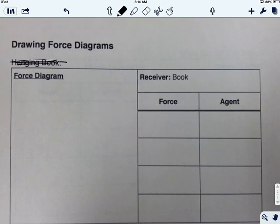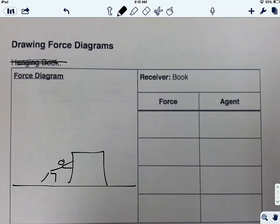So instead of the hanging book, let's imagine that it's a man pushing on a box. Okay, so we have to have the floor. We have a box. And then we've got like a little stick man pushing on the box. So if I've got that, then my receiver, I have to label my receiver first. This is a really important part.